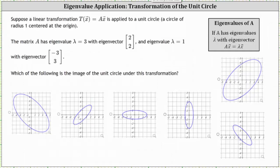Going back to the graphs: the first graph has been stretched along both the line y equals x and the line y equals negative x. But the second graph has only been stretched along the line y equals x and not stretched along the line y equals negative x, which is the correct graph of the unit circle after the given transformation. I hope you found this helpful.